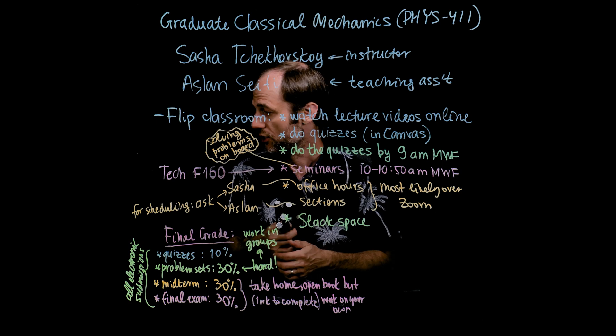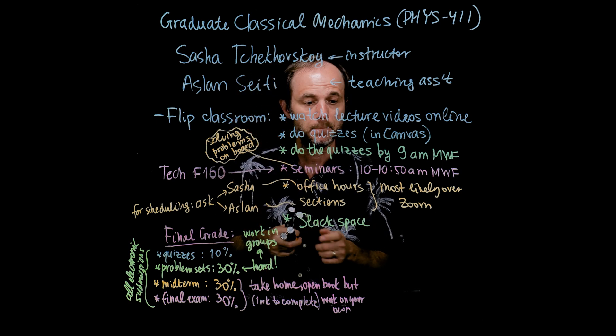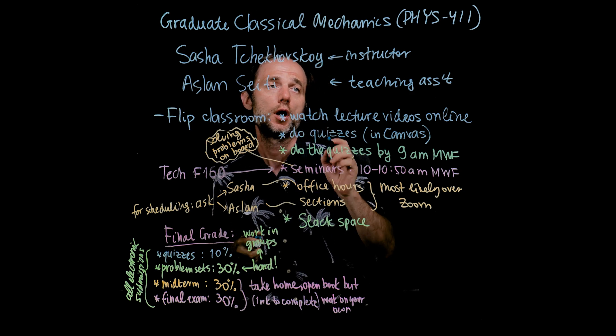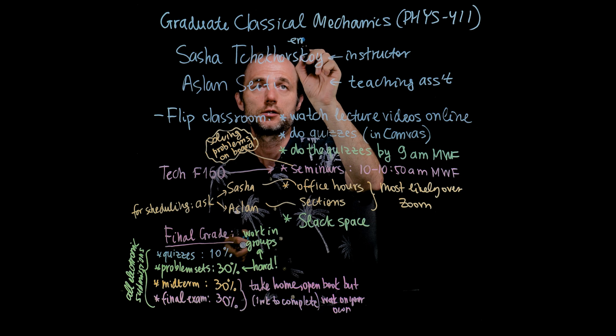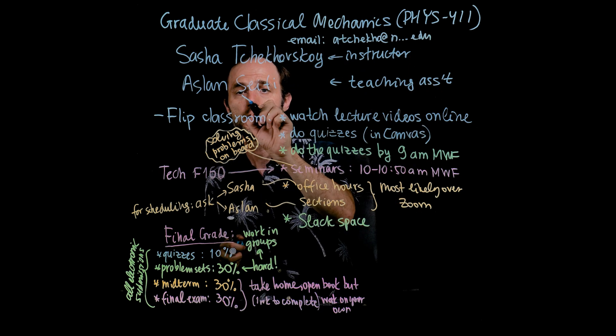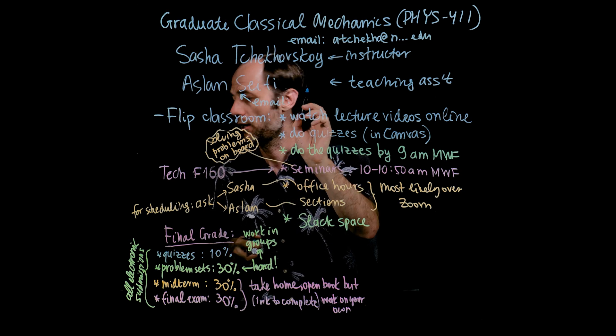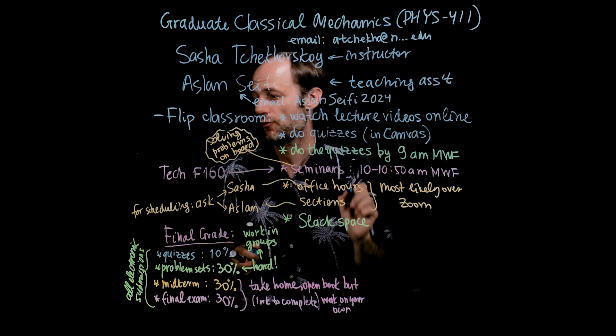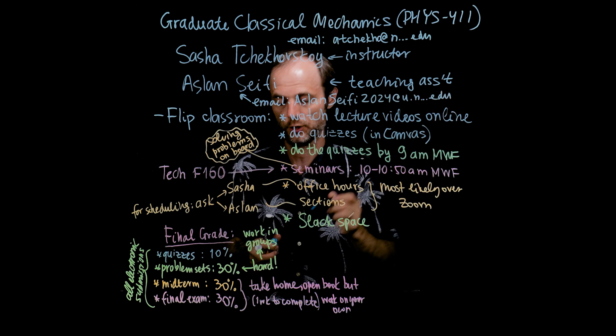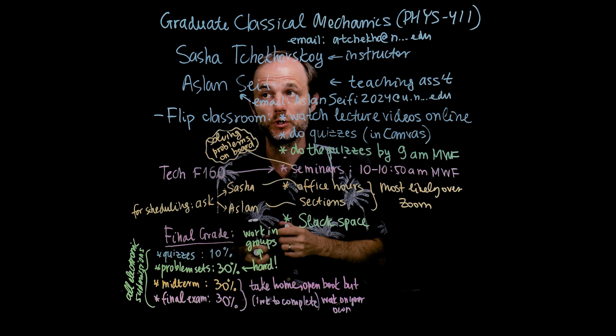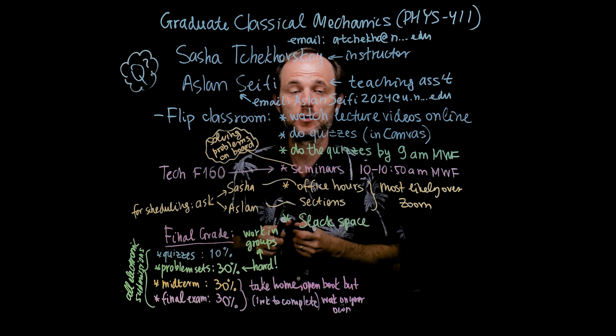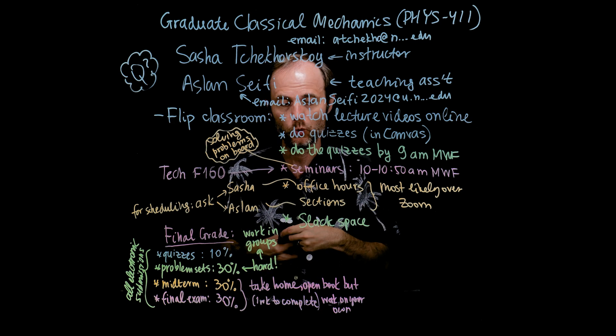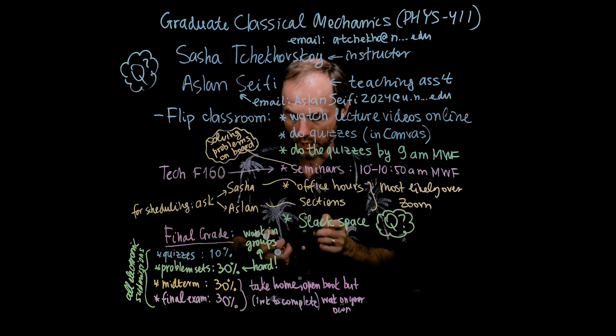Let me see what else is there left for me to discuss. Yes, the contact information, both mine and Aslan's, you can of course find it in the syllabus, which I recommend that you read. So my email is chko at northwestern.edu. And Aslan's email is, let's see, I'm going to get it right, hopefully. First name, last name, 2024 at u.northwestern.edu. So these are at least two ways of getting in touch with us if you have any questions about any of the material that we have in this class.